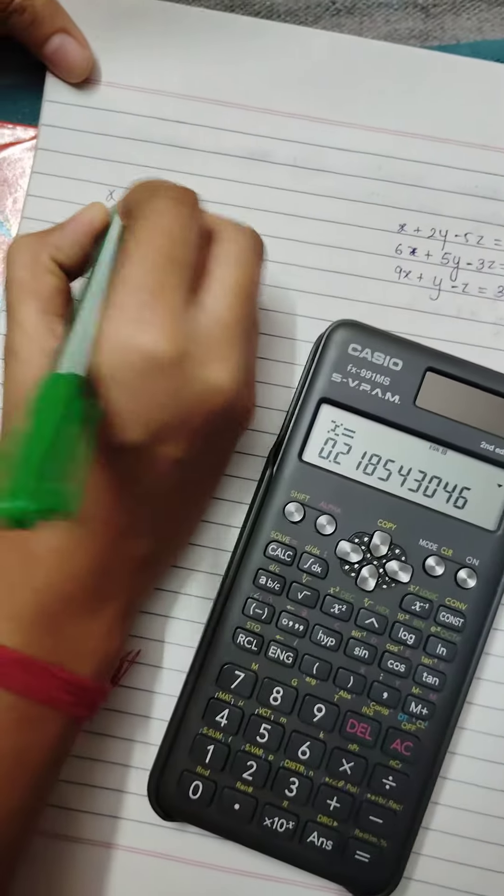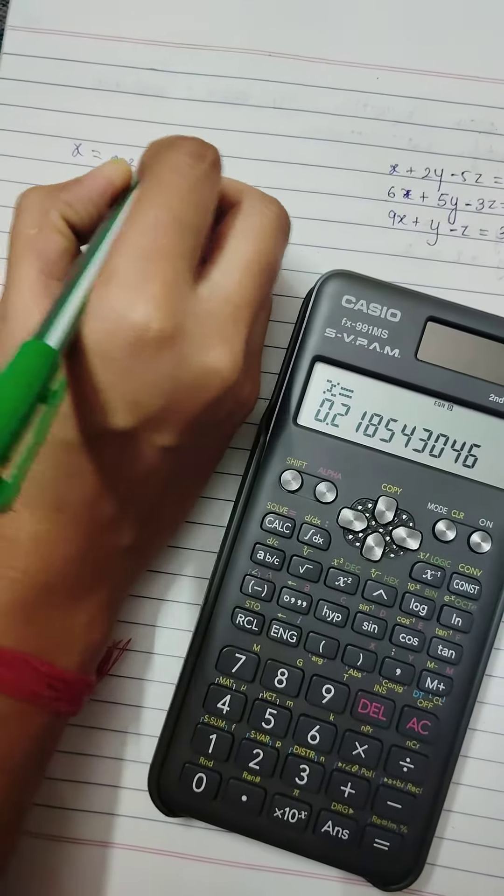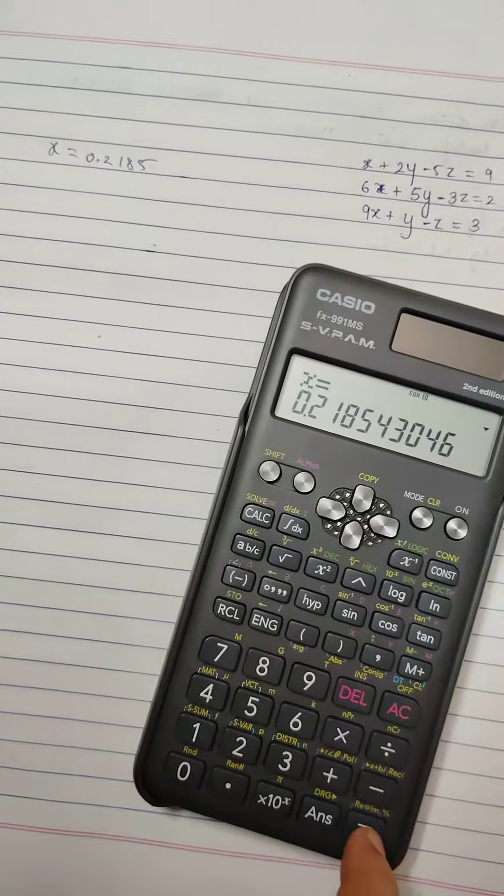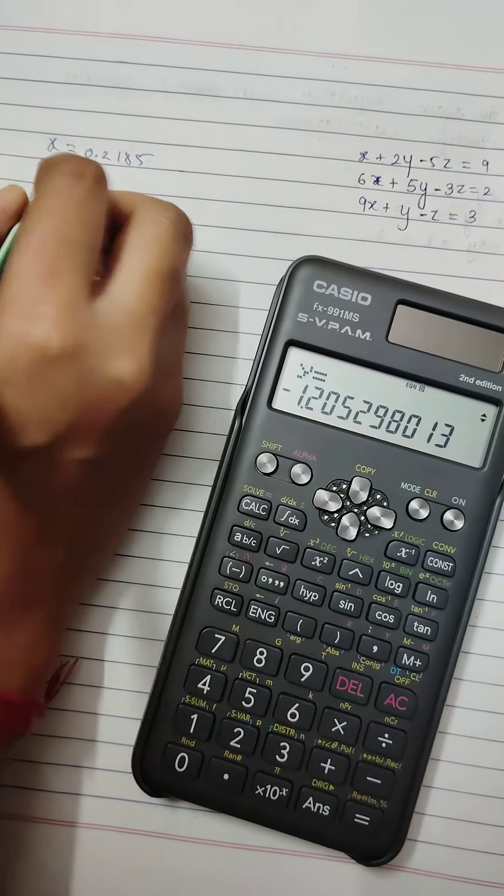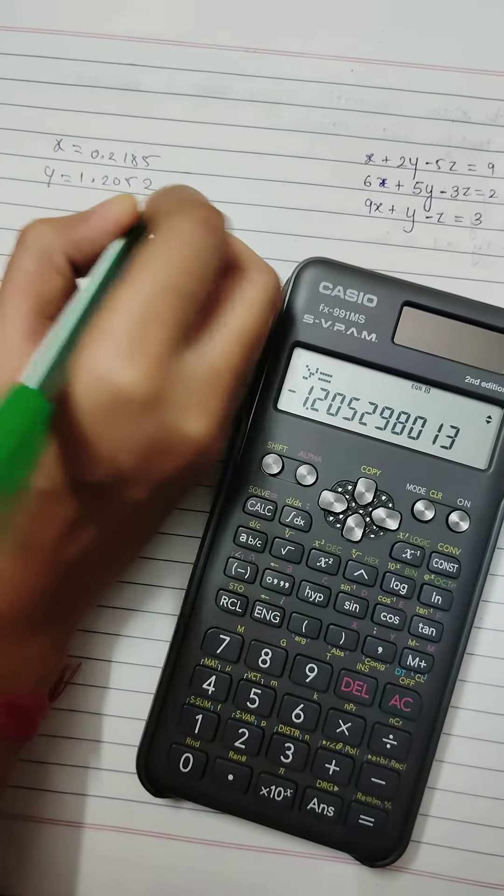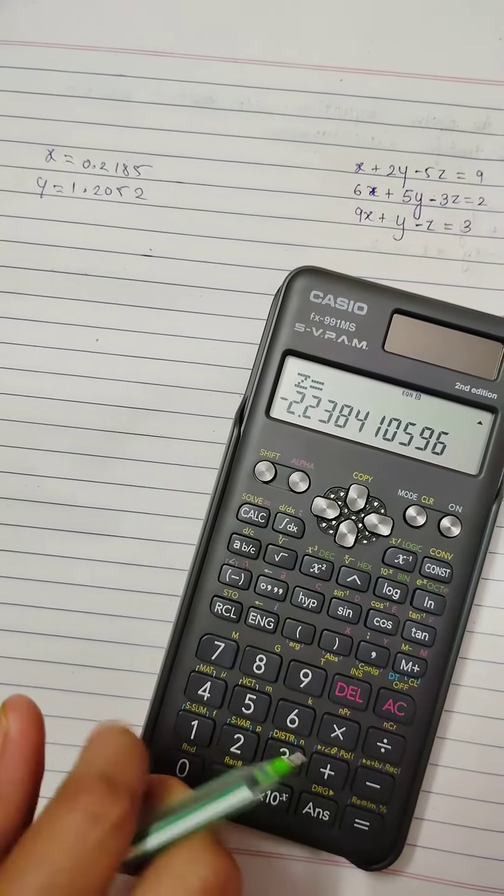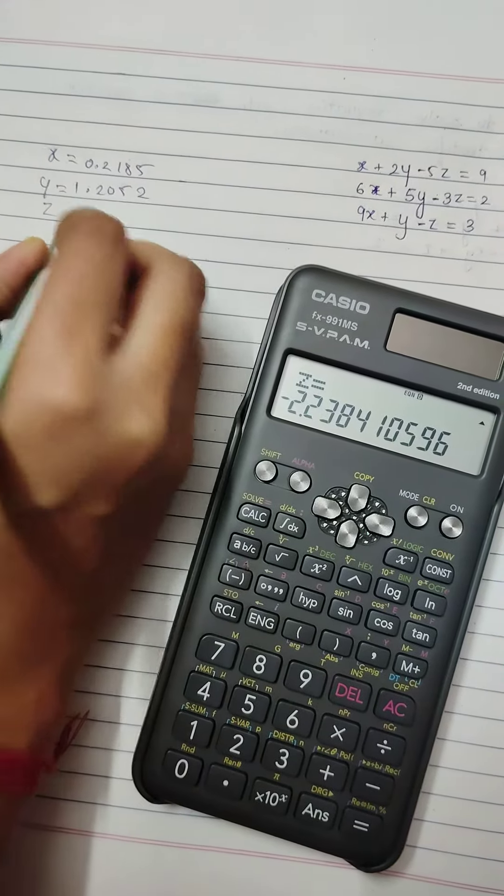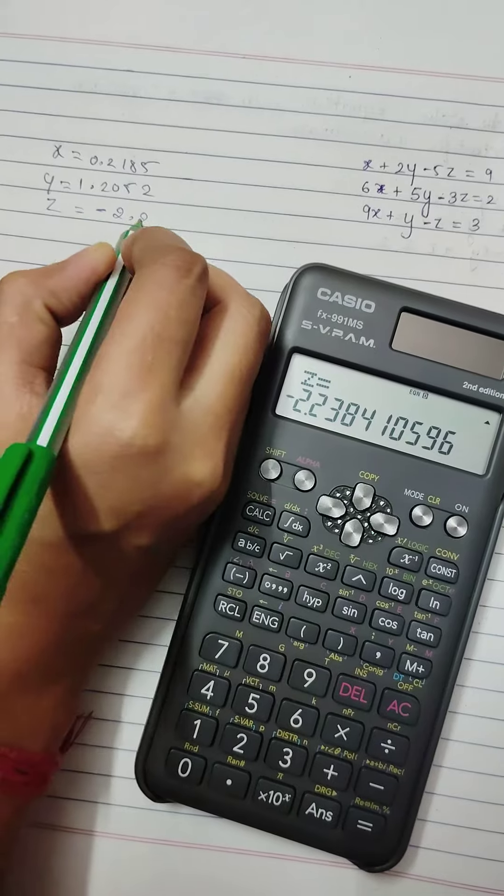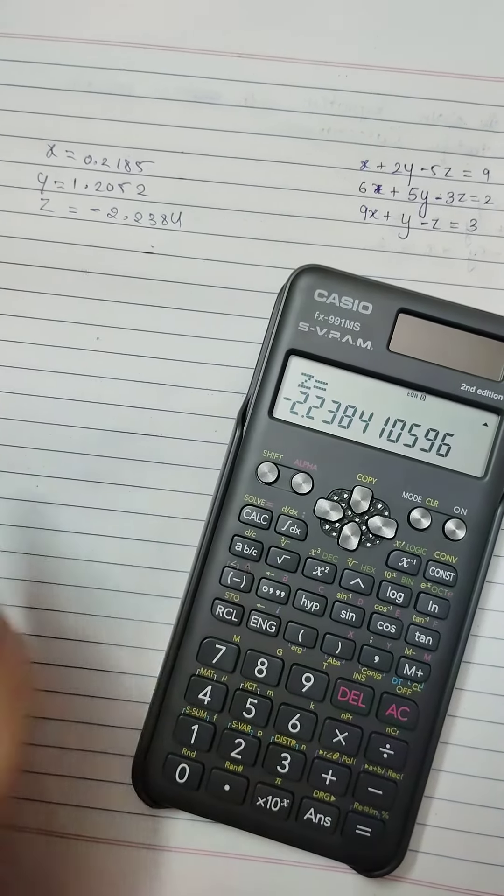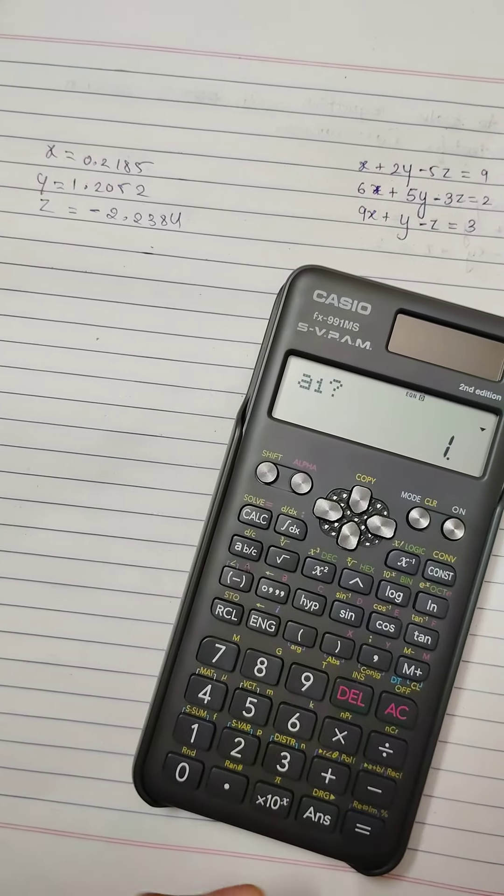So we got x value as 0.2185, and y value as minus 1.2052, and z value minus 2.2384. Thank you.